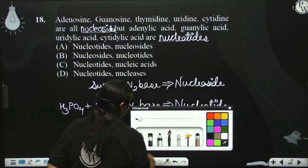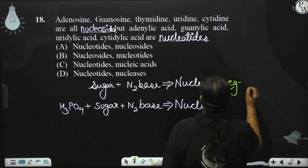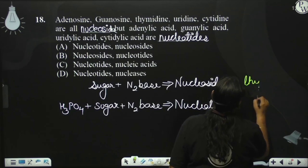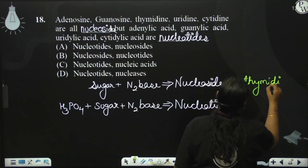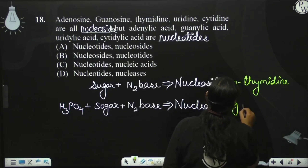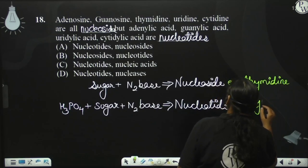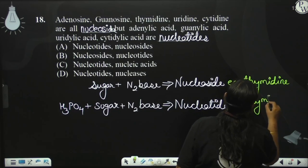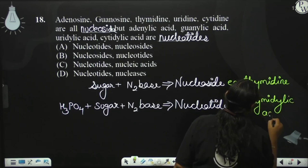I will also write an example for you. For example, thymidine — when a phosphate group is added, it becomes thymidylic acid.